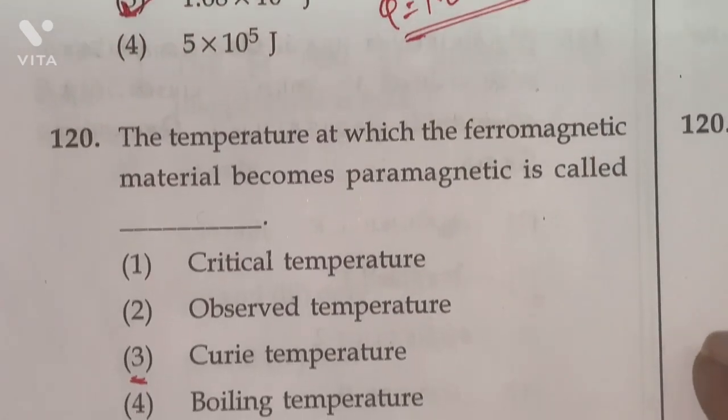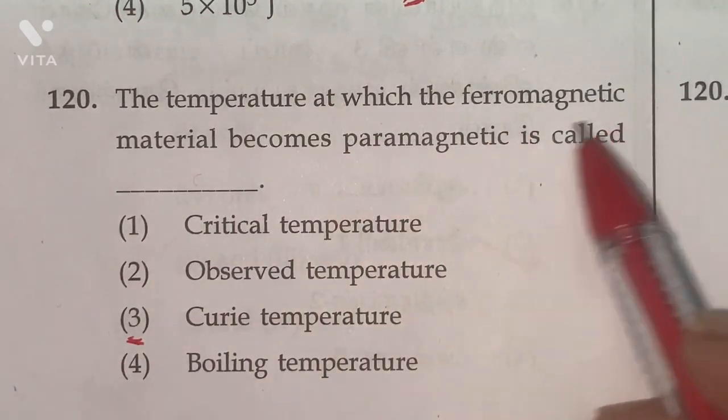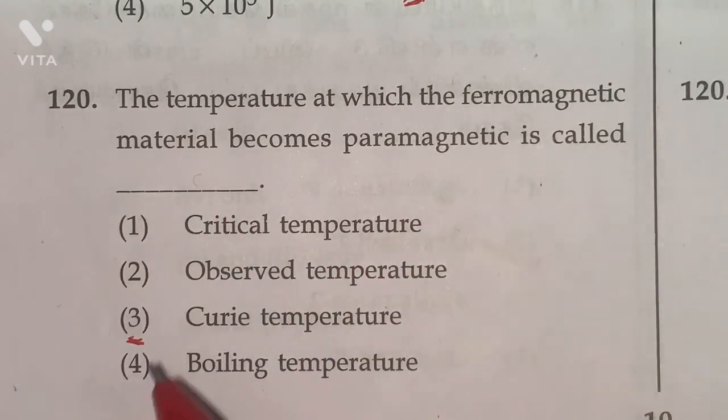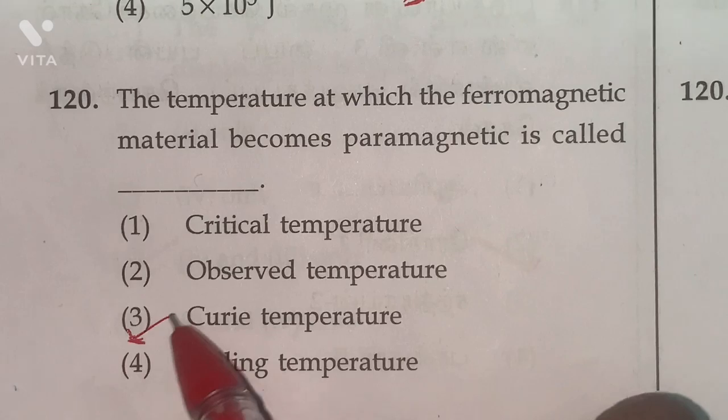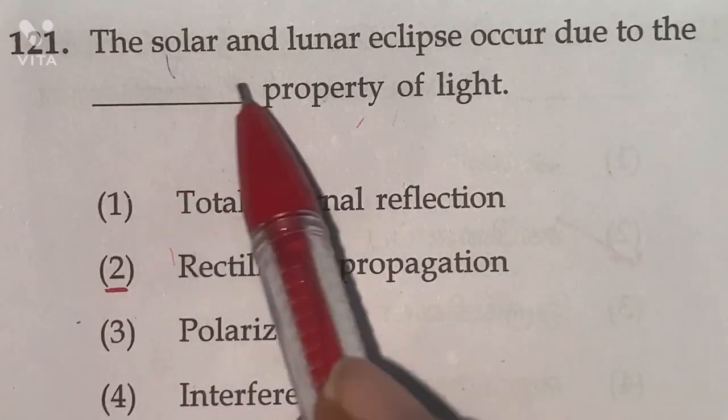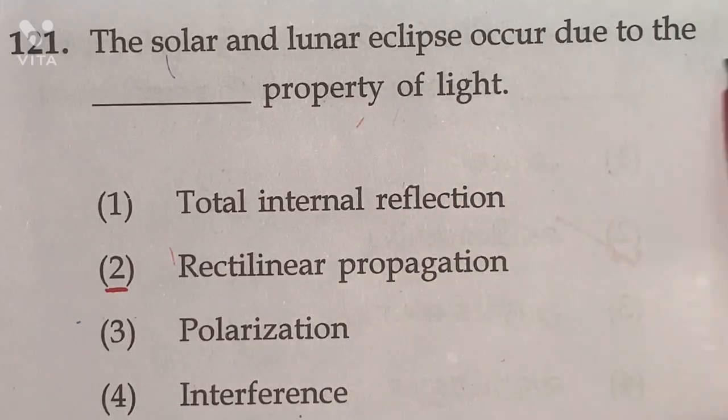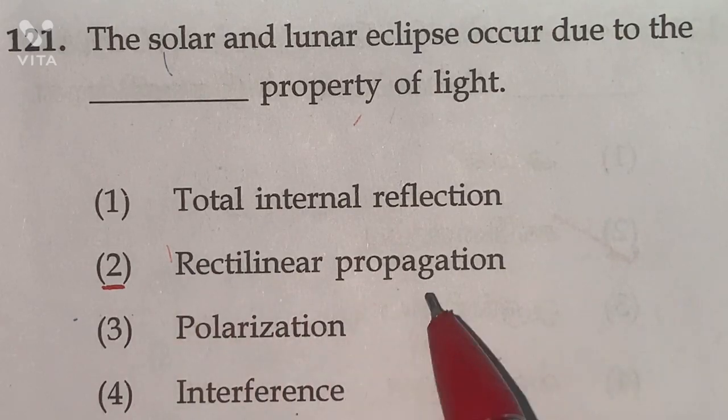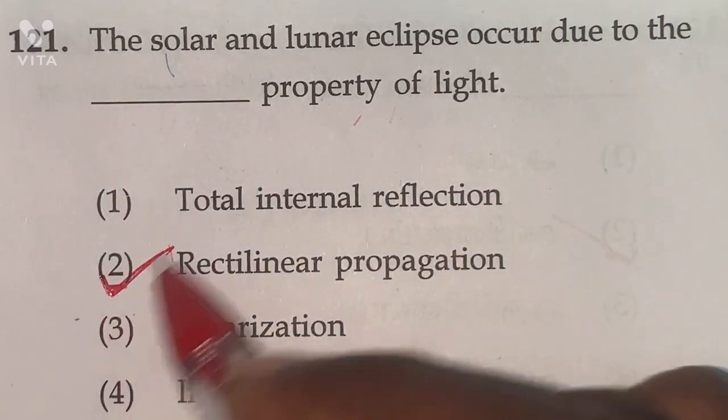120th. The temperature at which the ferromagnetic material becomes paramagnetic is called Curie temperature. Option 3rd one is the right answer. Question number 121. The solar and lunar eclipse occur due to the rectilinear propagation property of light. Option 2 is the right answer.